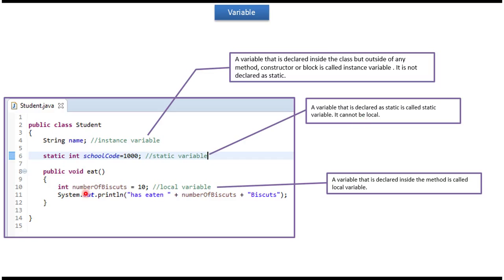Here I have defined the variable number of biscuits, and this variable is inside the eat method. So it is a local variable. A variable that is declared inside the method is called a local variable.